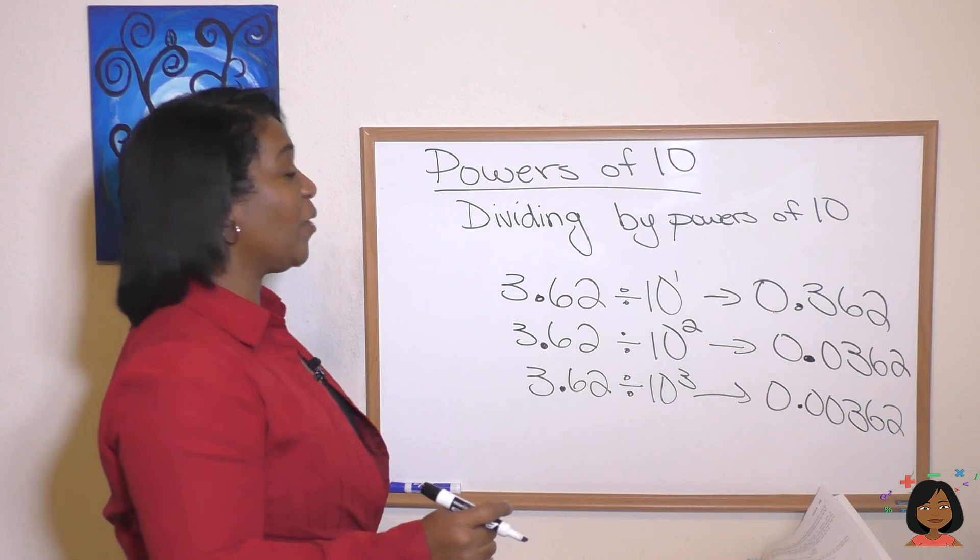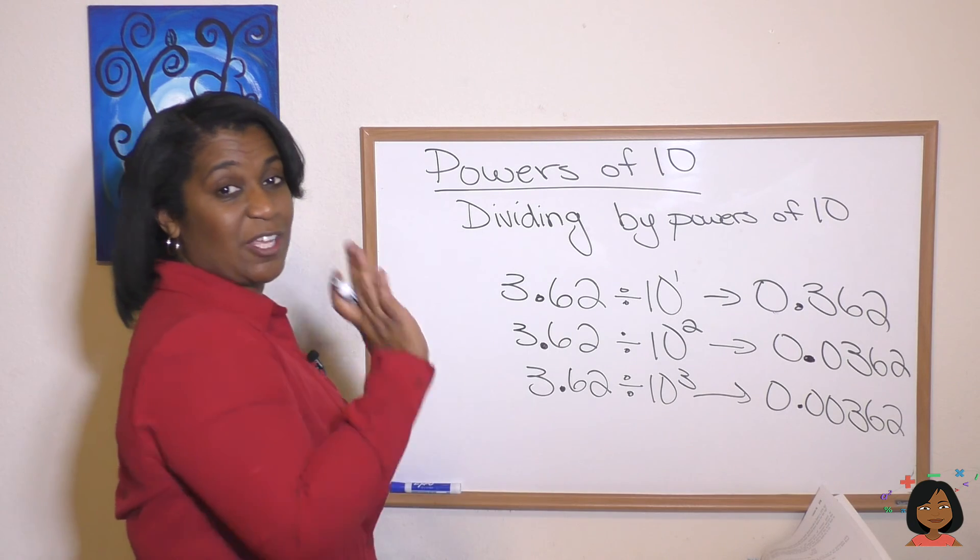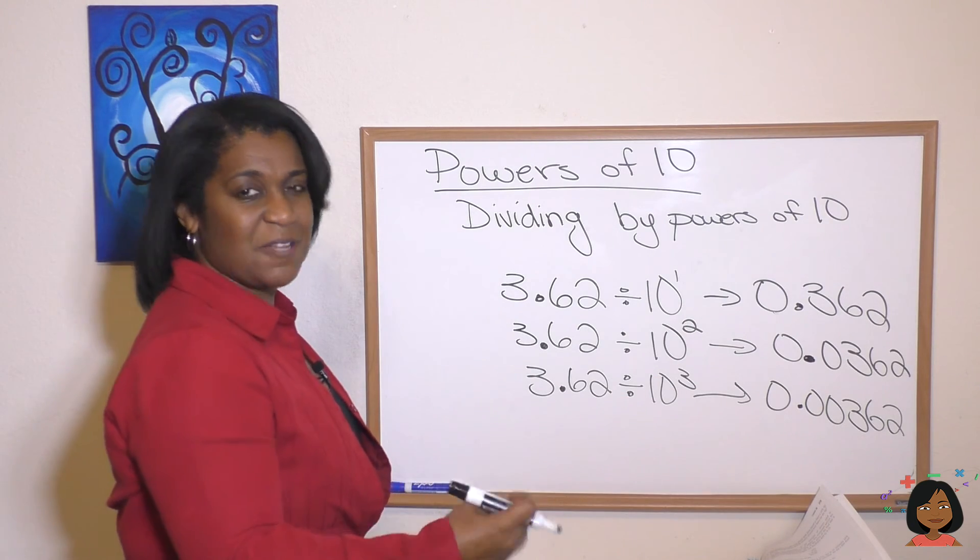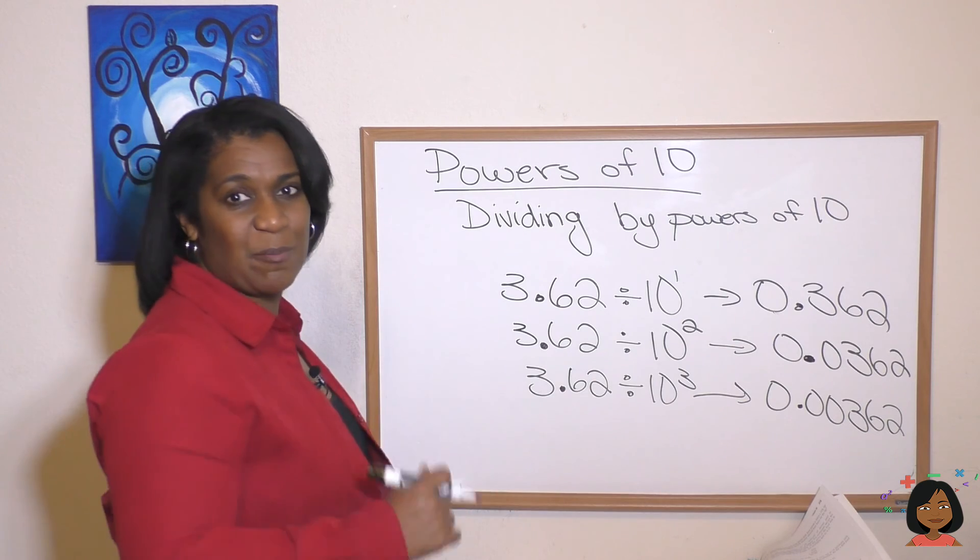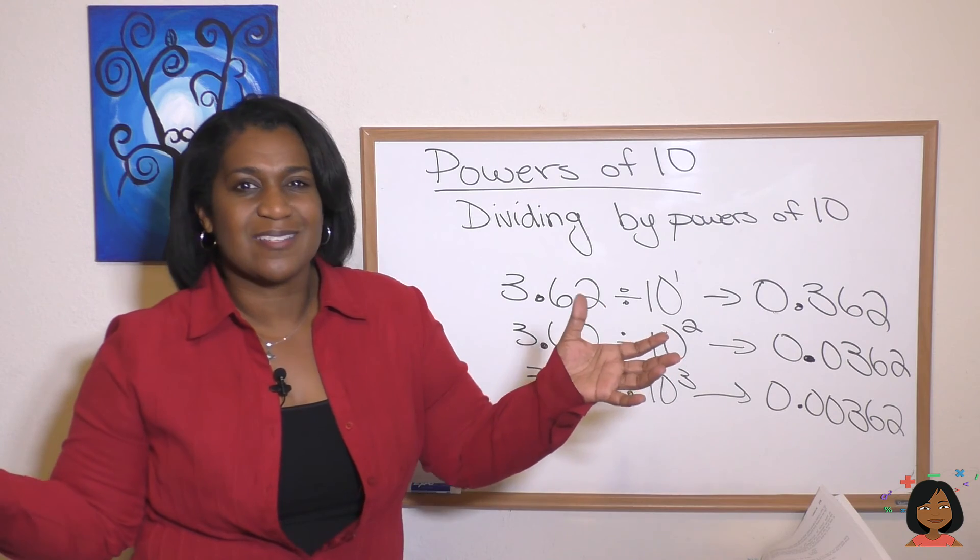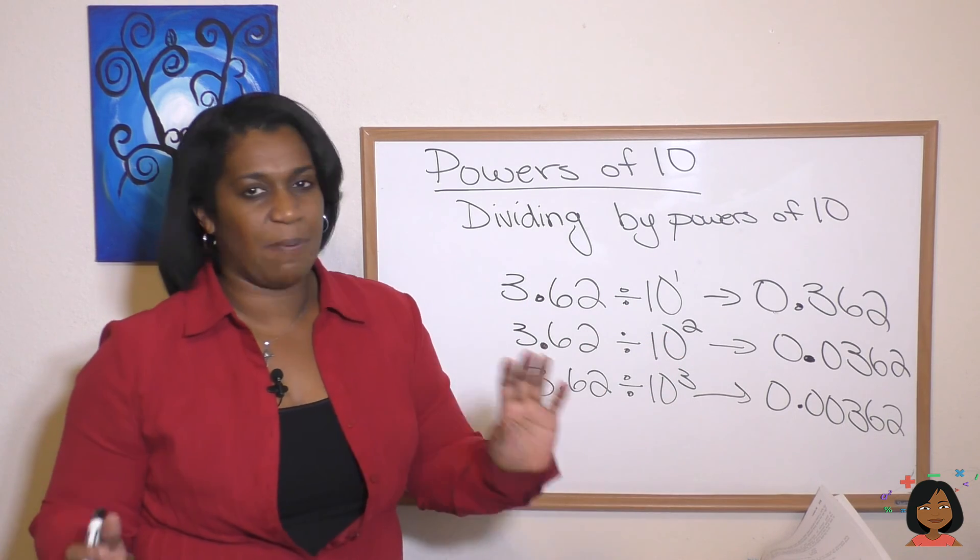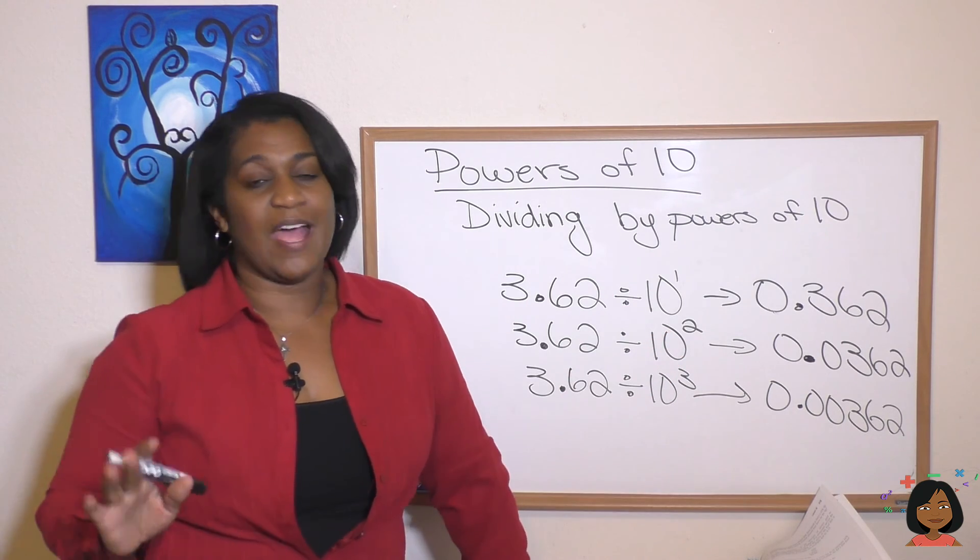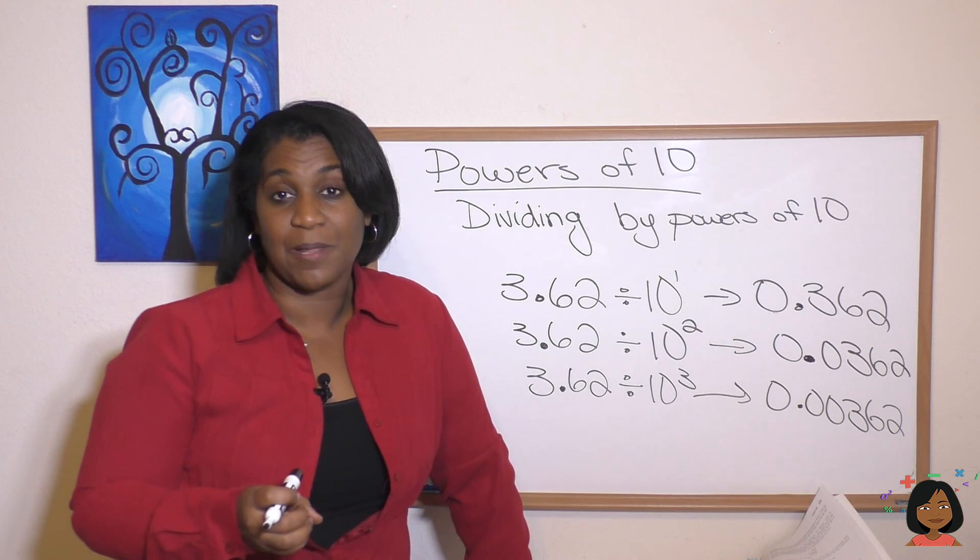So again the rule when multiplying decimal point goes to the right the number of zeros. And when dividing it goes to the left the number of zeros. And that's it. I call this a hodgepodge of a lesson because it's just all different things about the powers of 10.